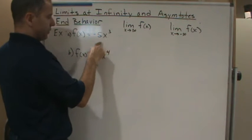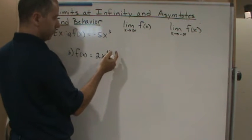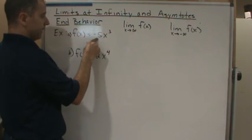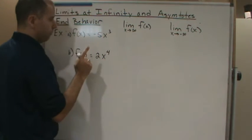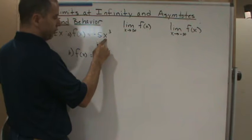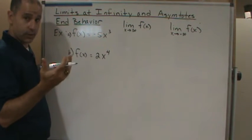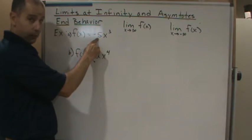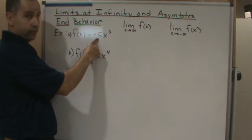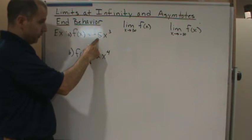Notice here, this is a polynomial with a degree of three, so it has an odd degree and the leading coefficient is negative. For end behavior, odd degree means that the tails are going in opposite directions, and you couple that with the fact that you have a negative leading coefficient, so that means it has a general downward trend from left to right.